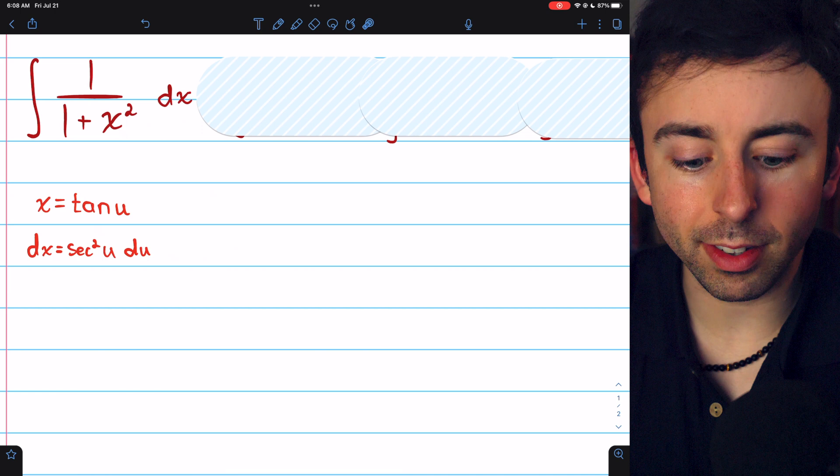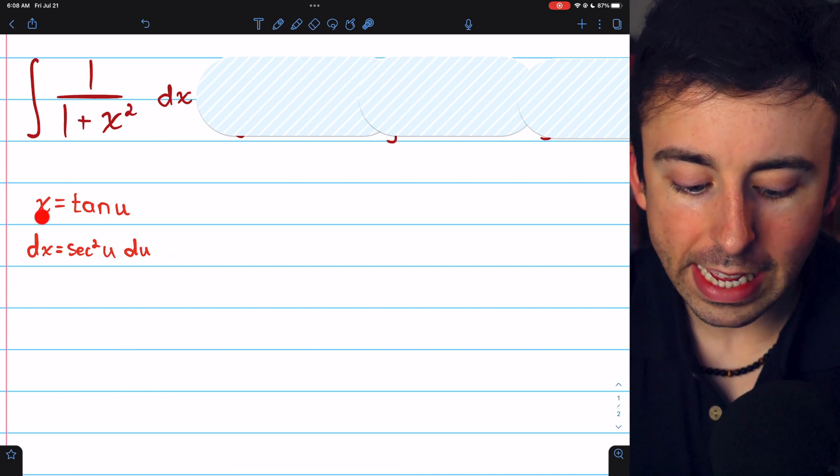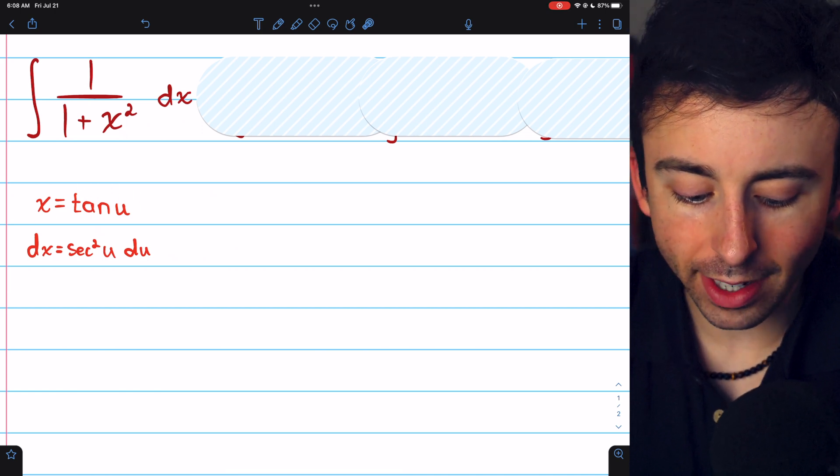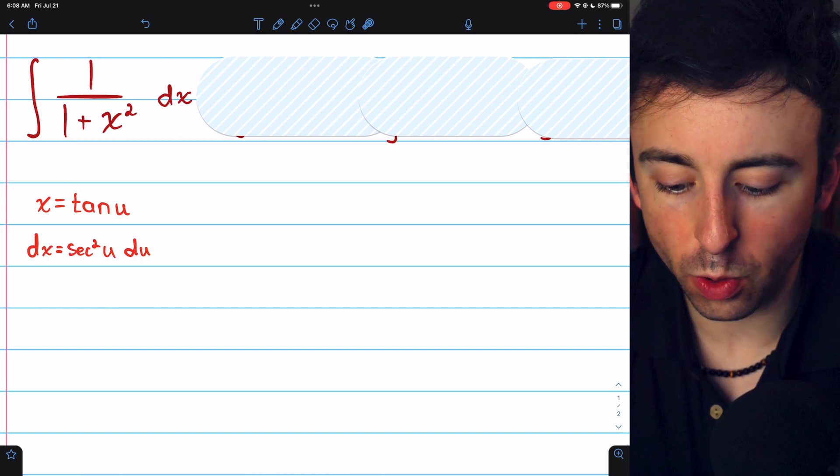Suppose u is some variable such that the tangent of u equals x. Then, dx equals secant squared u du.